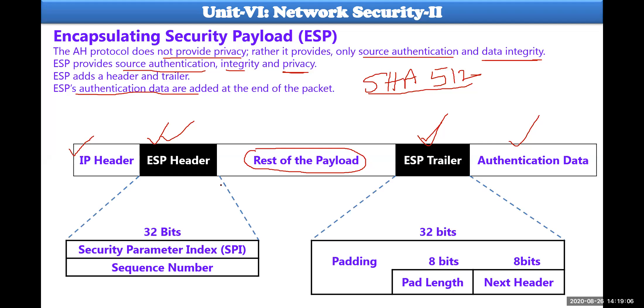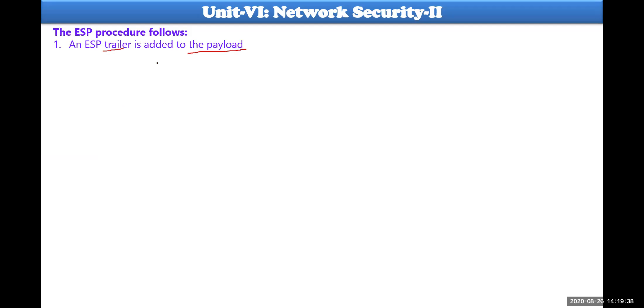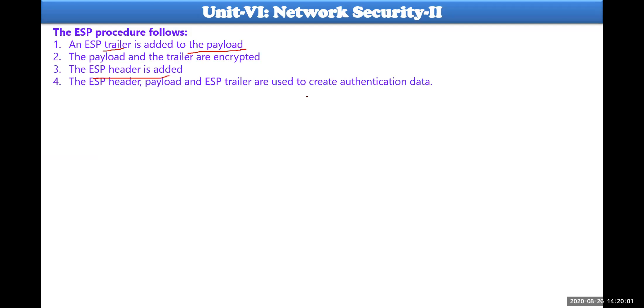Authentication data is the message digest identified by SHA. Everything is placed and appended at the right places of the total packet. The procedure for framing ESP is: number one, the ESP trailer is added after the payload. Then the payload and trailer can be encrypted to identify the message digest. After encryption is identified, the ESP header is added. Then ESP header, payload, and ESP trailer can be used to authenticate the specific data. Authentication data will always be added at the end of the packet.